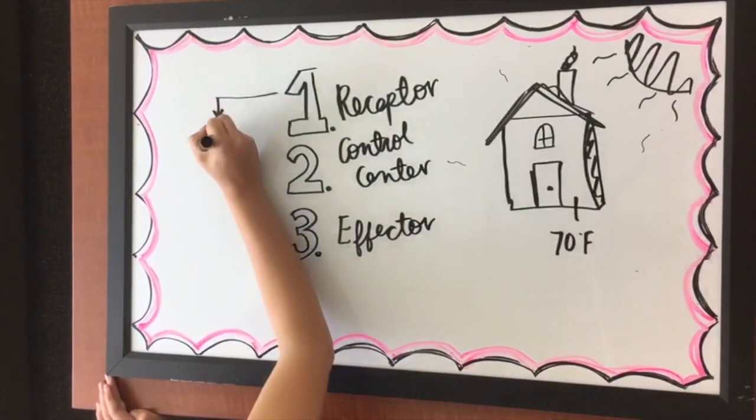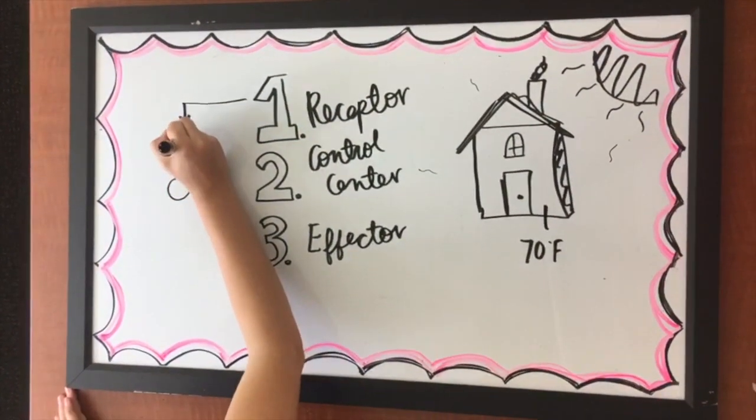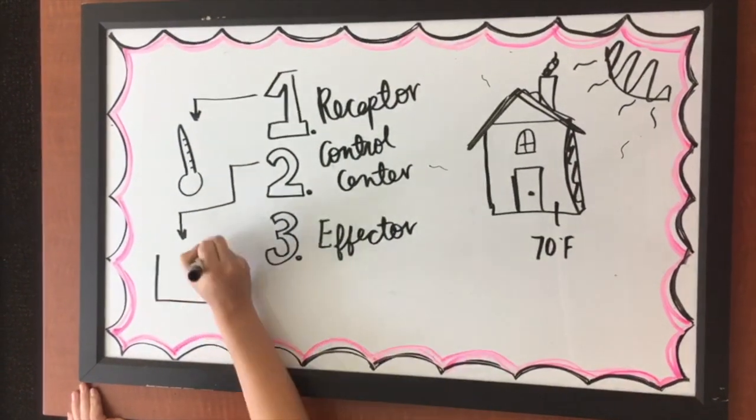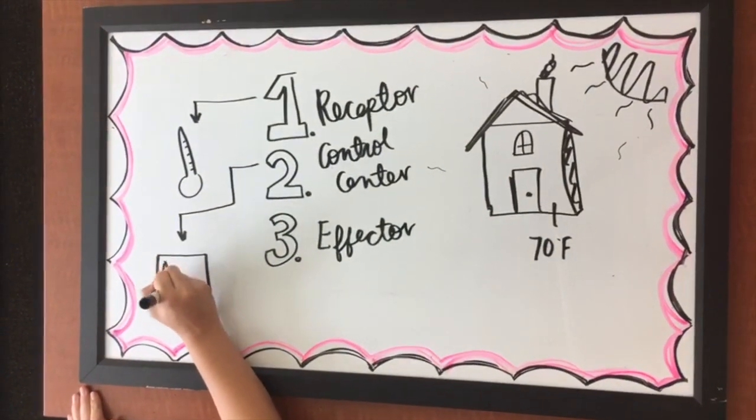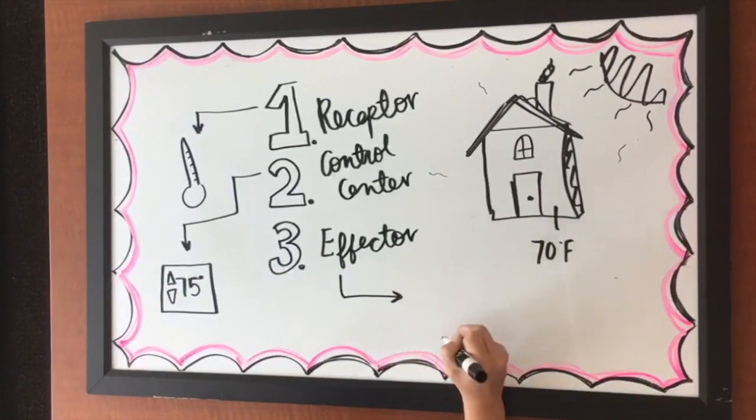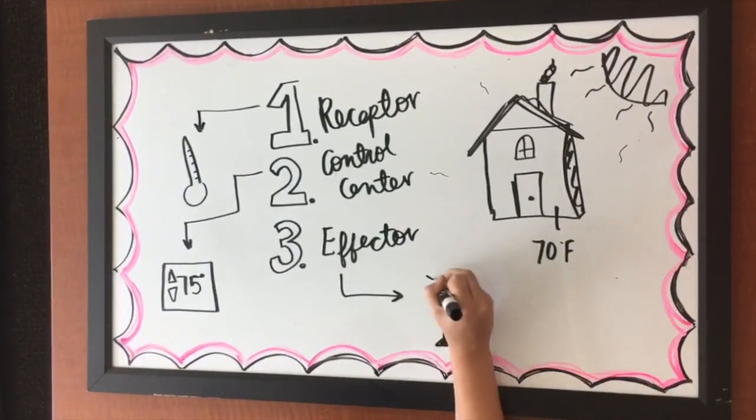The thermometer is the receptor that recognizes the change, and the control center in the thermostat figures out how to correct the change. The air conditioner is the effector that lowers the temperature back to 70. This is a simplified version of how the human body works.